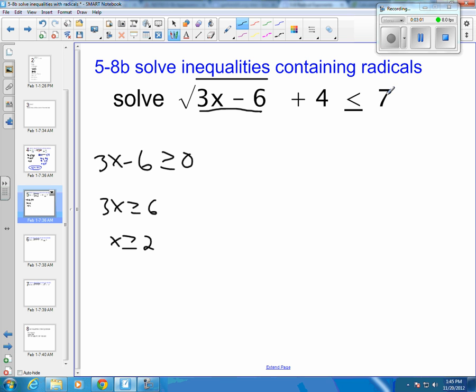Then we do the other half, so we need to subtract 4 from both sides, and you get the square root of 3x minus 6 is less than 3. Square both sides, so 3x minus 6 is less than or equal to 9.